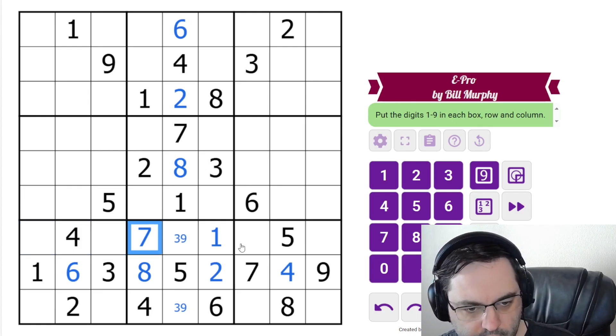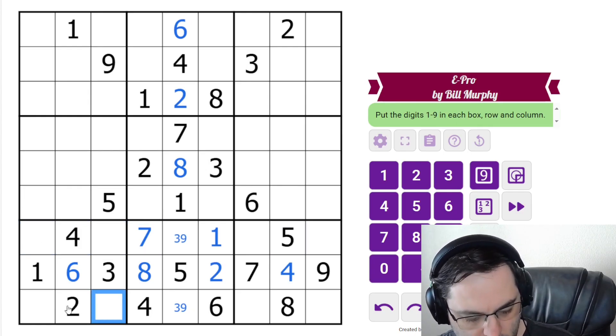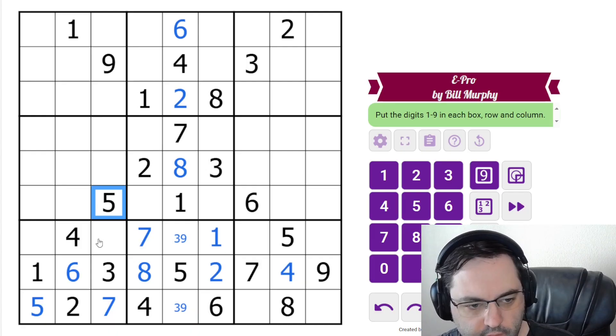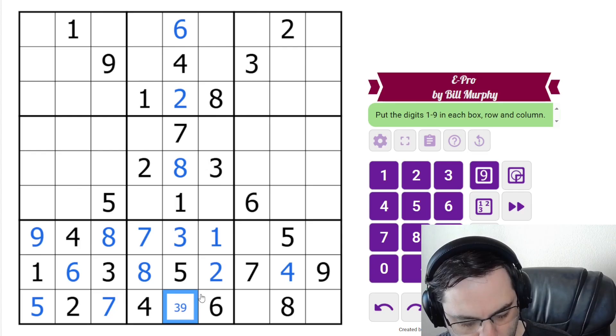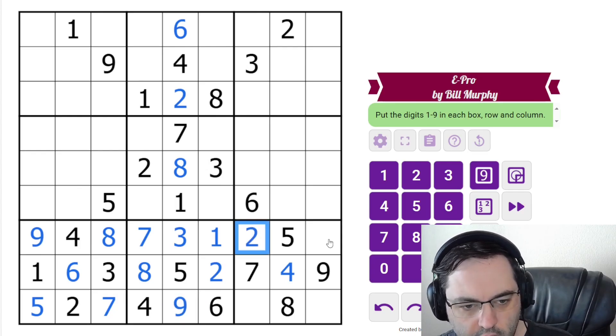We still need 5 and 7 in this box, they're already in the row, so they're going to have to go in this order because of that 5, and then this is 8, 9, also resolved by that 9, resolves 3 and 9, and 2 and 6, and 1 and 3.